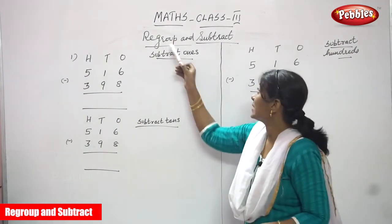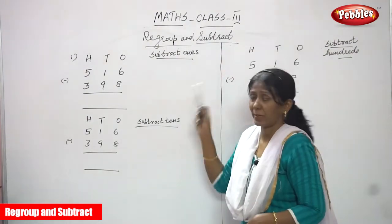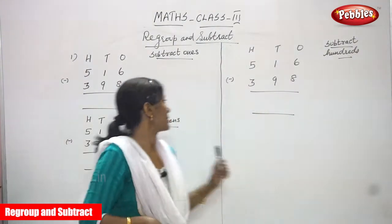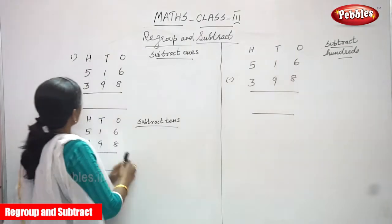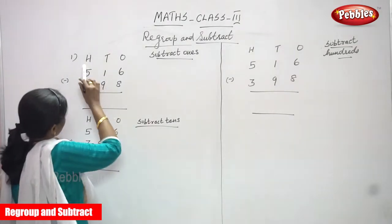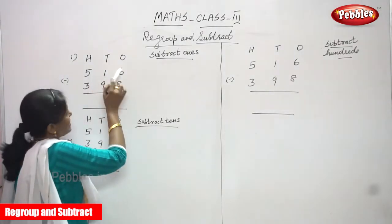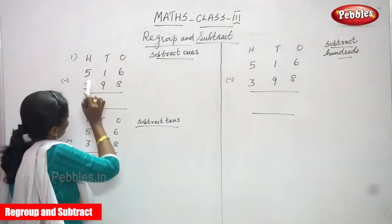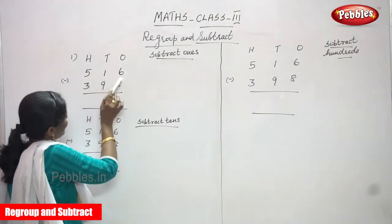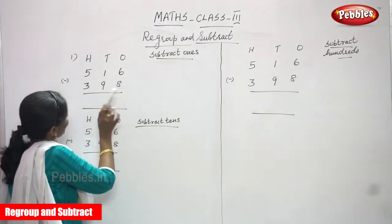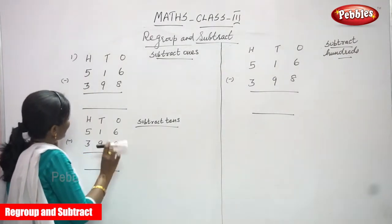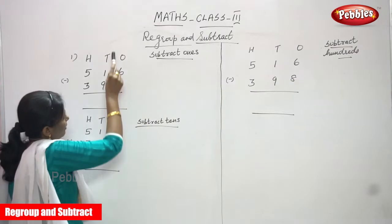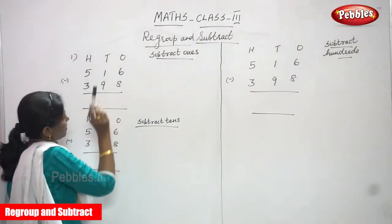Now we are going to see regroup and subtract. Let's start the class. The first one is: hundreds, tens and ones — 5 1 6 minus 3 9 8. So 516 means five hundred and sixteen, and 398 means three hundred and ninety-eight. We are going to subtract, so we have to start with the ones place.